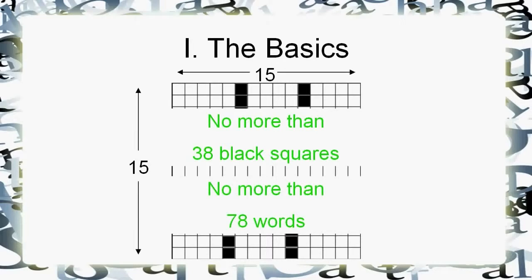And when you're done putting in the black squares, you can't have more than 78 words in the puzzle. These aren't hard and fast, but those are good guidelines. No one-letter words and no two-letter words in the puzzle — you've got to have all three-letter words or more.